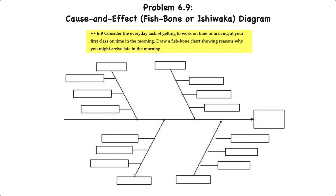What we're going to do is draw a fishbone diagram showing reasons why we might arrive late in the morning. A fishbone diagram starts at the tip or the head of the fish by identifying what the nature of the quality problem is. For our problem here, the quality issue is getting to work or school late. With cause and effect diagrams we identify four major categories of reasons, also known as the four Ms: materials, methods, machinery, and manpower.